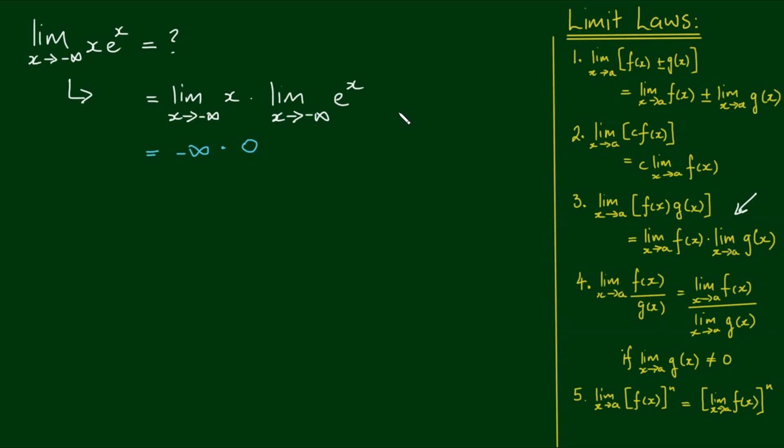Okay, so if we do a quick sketch of the function e to the x here, as we move towards the left to negative infinity, the function asymptotes towards 0.